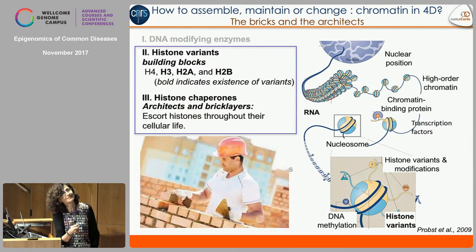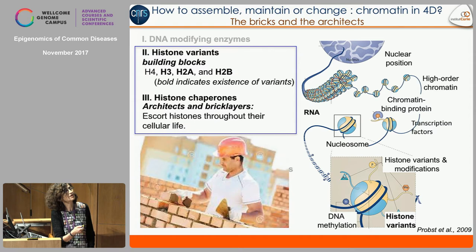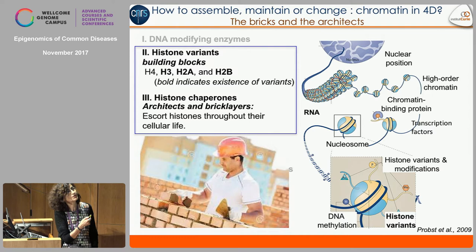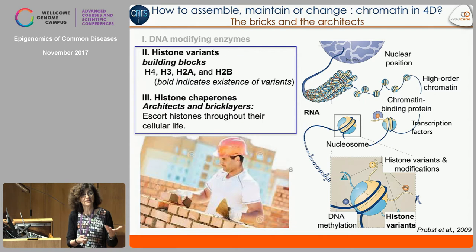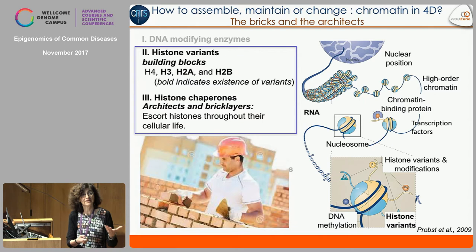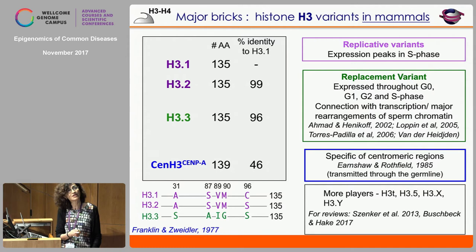Getting back to the bricks and the architects — here are the bricks: the histone variants as building blocks. In terms of histones, they come in four distinct components: H3, H4, H2A and H2B, and variants mainly exist for H3, H2A and H2B. H4, except in testes, doesn't have many variants in mammals. The histone chaperones as architects or bricklayers escort histones throughout all their cellular life, from synthesis to their place of deposition, as well as for their eviction and potentially disposal.